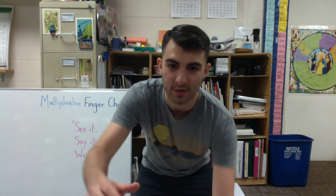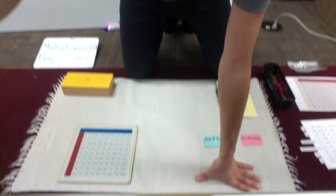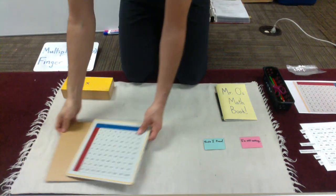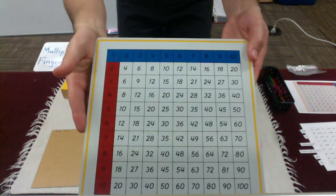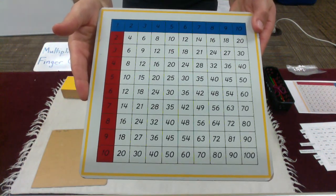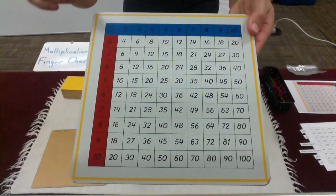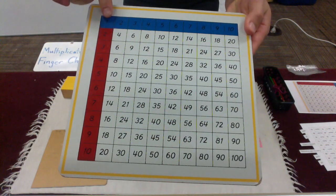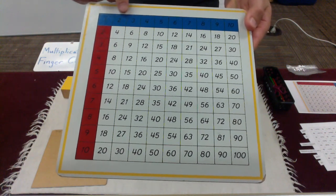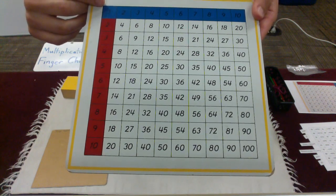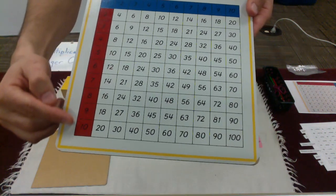Alright, so first thing for our multiplication finger chart is going to be this board. It looks very similar to our addition finger chart. There are some differences, however. So along the top you have the numbers 1 all the way up to 10, and then going down the side as well, 1 through 10.